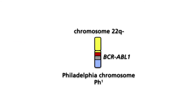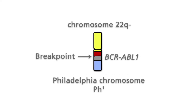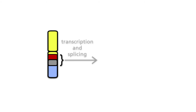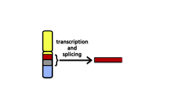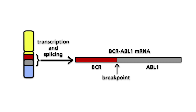After translocation, the Philadelphia chromosome carries the new fusion gene BCR-ABL, consisting of the 5' part of the BCR gene fused at the breakpoint to the 3' part of the ABL gene. The exact breakpoints where the two genes are fused vary on the DNA level. Nevertheless, after transcription and splicing, only a few different mRNA transcripts result from the BCR-ABL translocation.